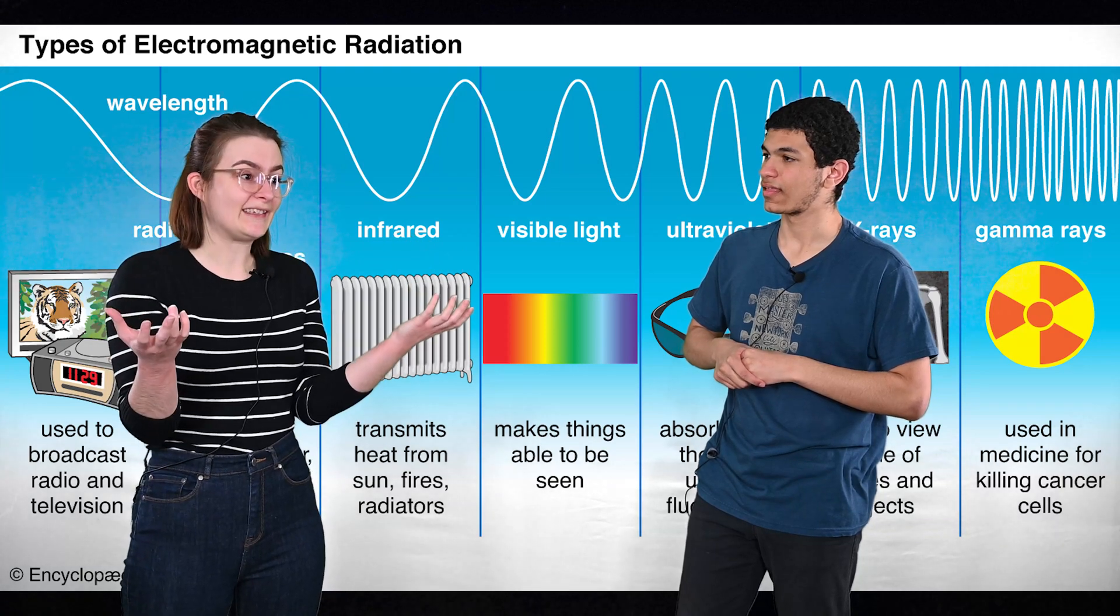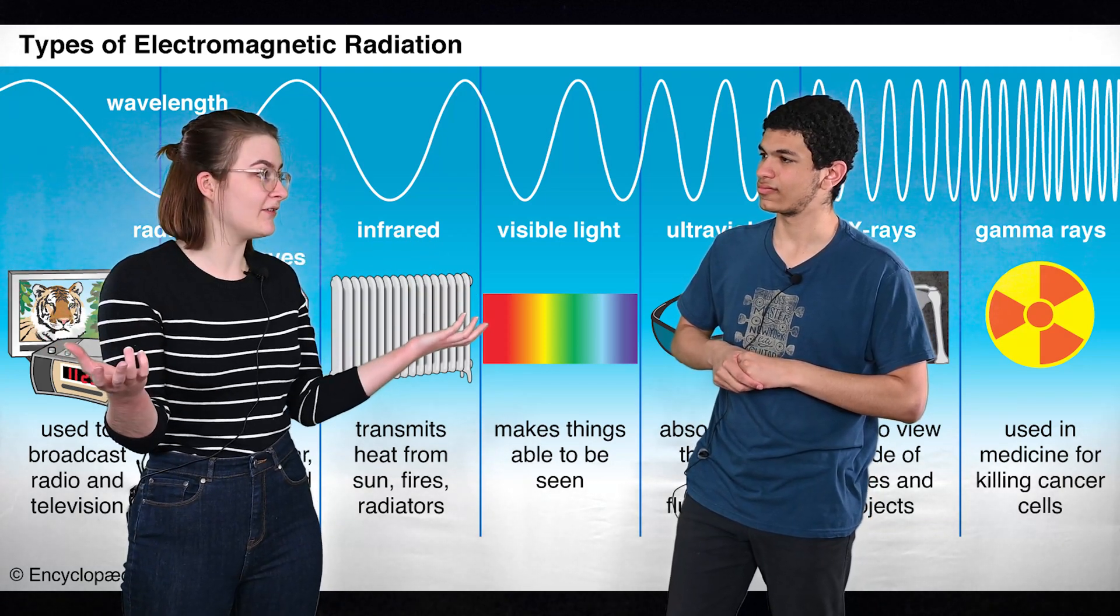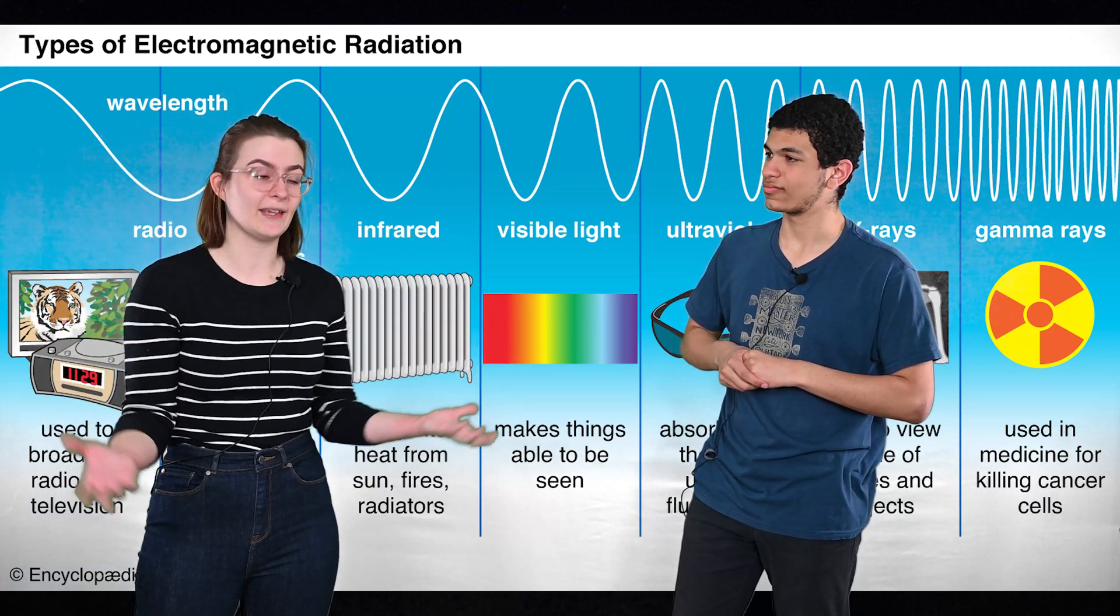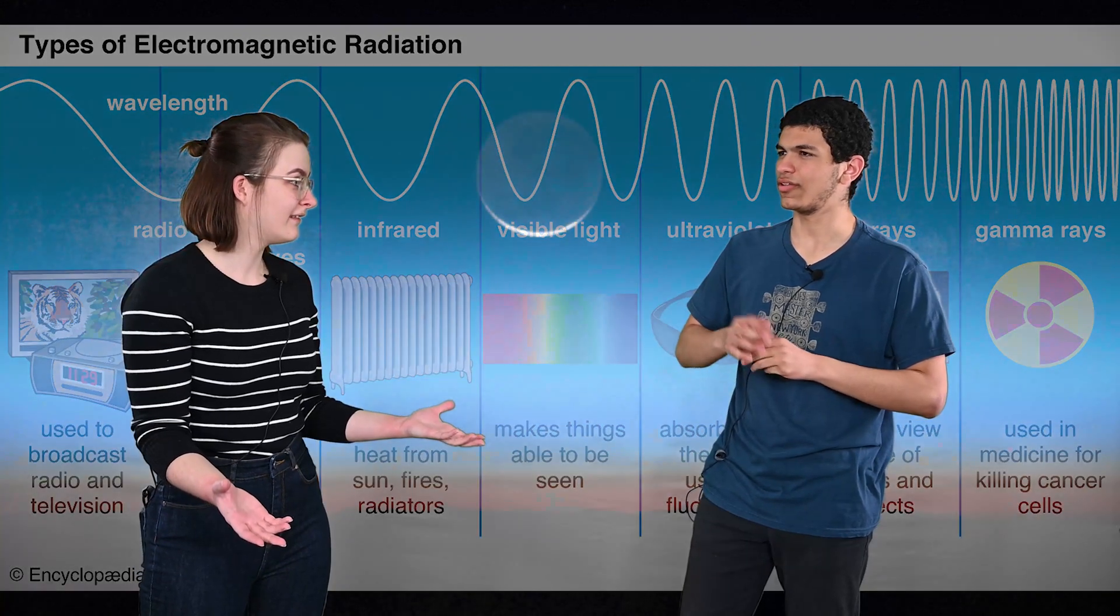So we could really see anything anywhere in the universe because everything is giving off some kind of light. What about other planets? Oh, yeah, of course. We can even see planets outside of our solar system. We call those exoplanets. Do you want to see some?